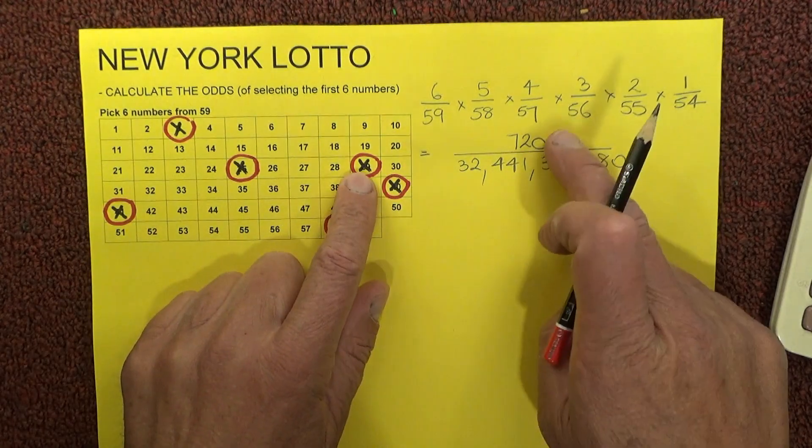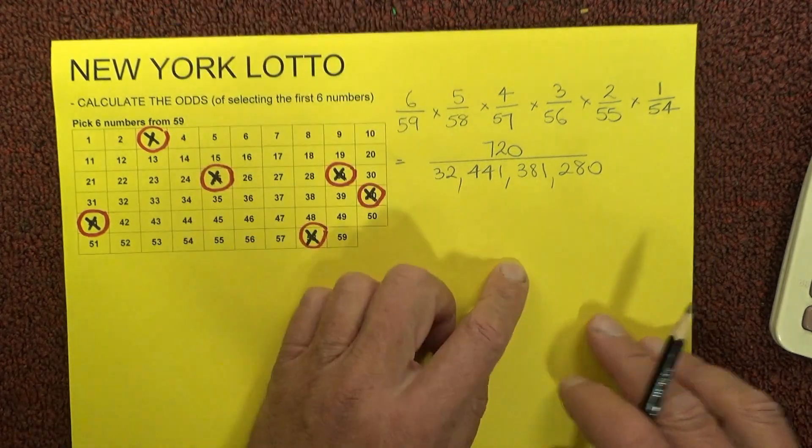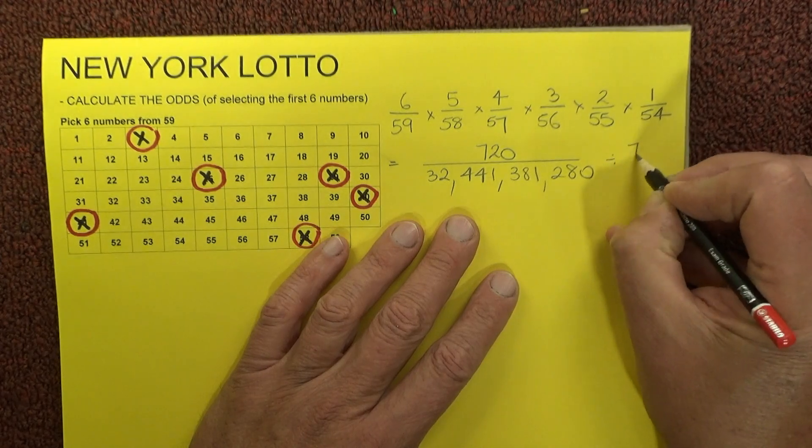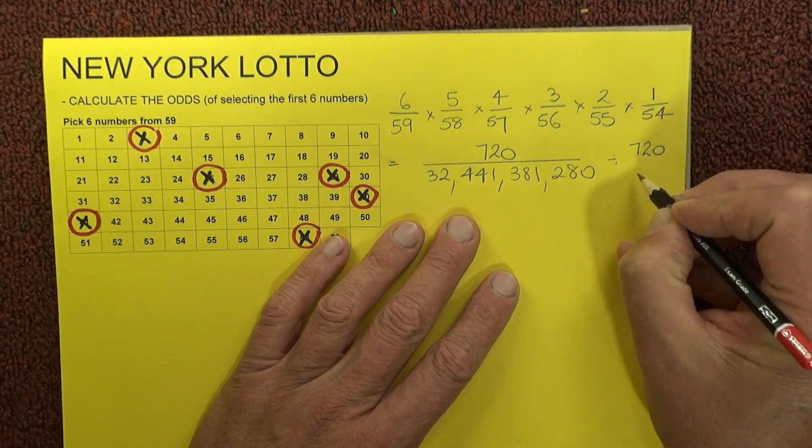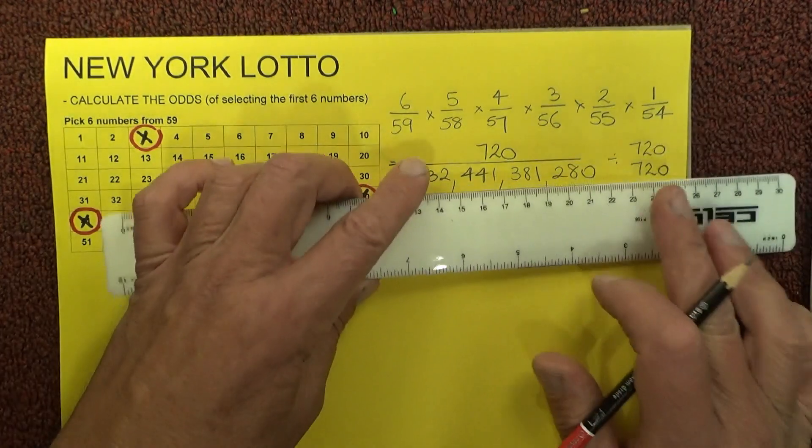So the odds then of selecting the first six numbers, winning first prize in New York Lotto, is 720 chances in 32 billion. I'm just going to simplify that fraction, or the odds again, by just dividing the top and the bottom by 720.